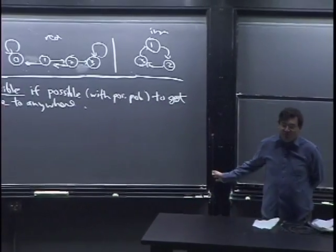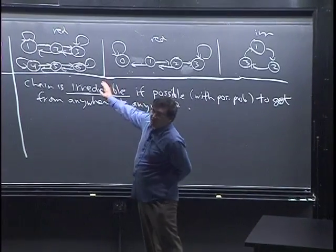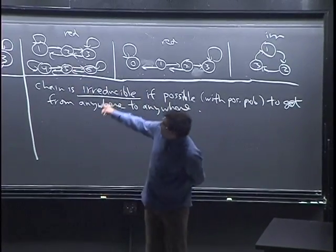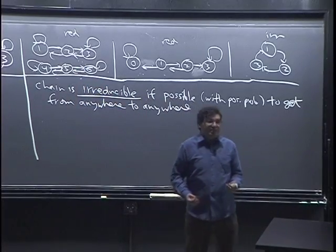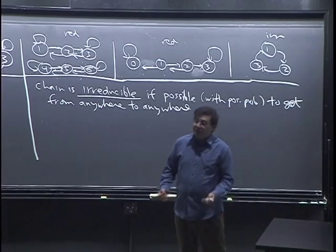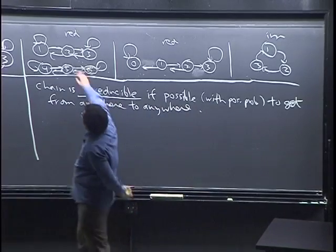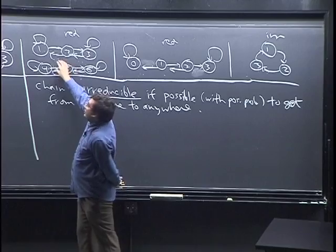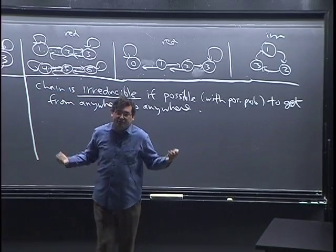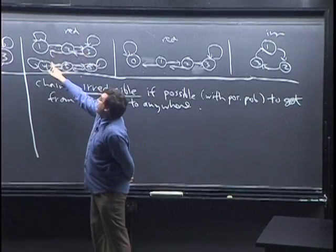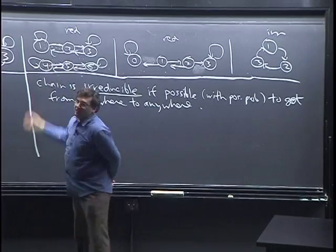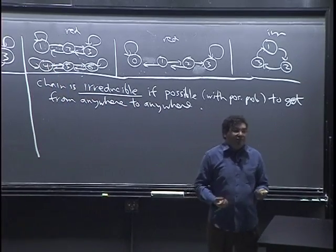Reducible chains are annoying, but it's not a big deal because if you happen to have a reducible chain, you can always split it up into irreducible components and study those separately. For the two-group chain, I can think of that as two separate Markov chains — one on states one, two, three, and one on four, five, six — because if you start up here, then you're there forever and the other states are completely irrelevant. So for the most part, we only need to look at irreducible chains.